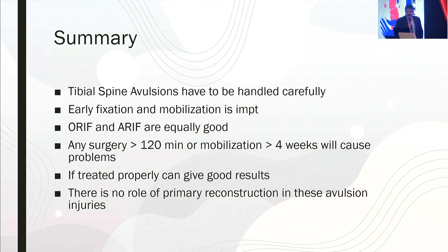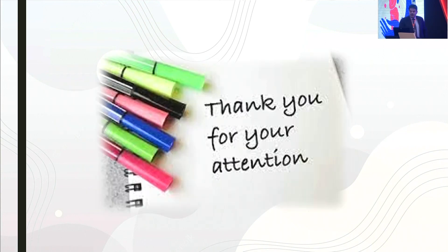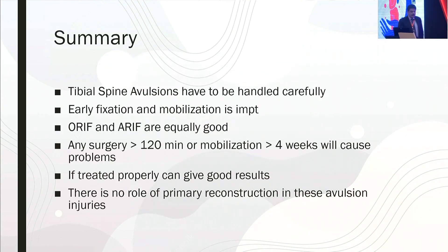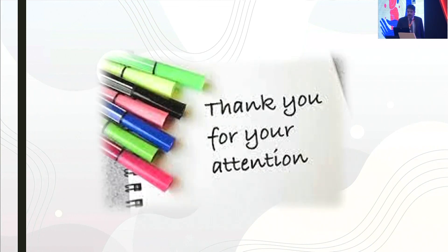In summary, anterior tibial spine fractures must be handled carefully. Early fixation and mobilization is important. Both arthroscopic and open reduction are acceptable. However, any surgery delayed beyond seven days, operative time exceeding 120 minutes, or mobilization delayed beyond four weeks will cause problems. There is no role for primary reconstruction in these patients. Thank you for your attention.